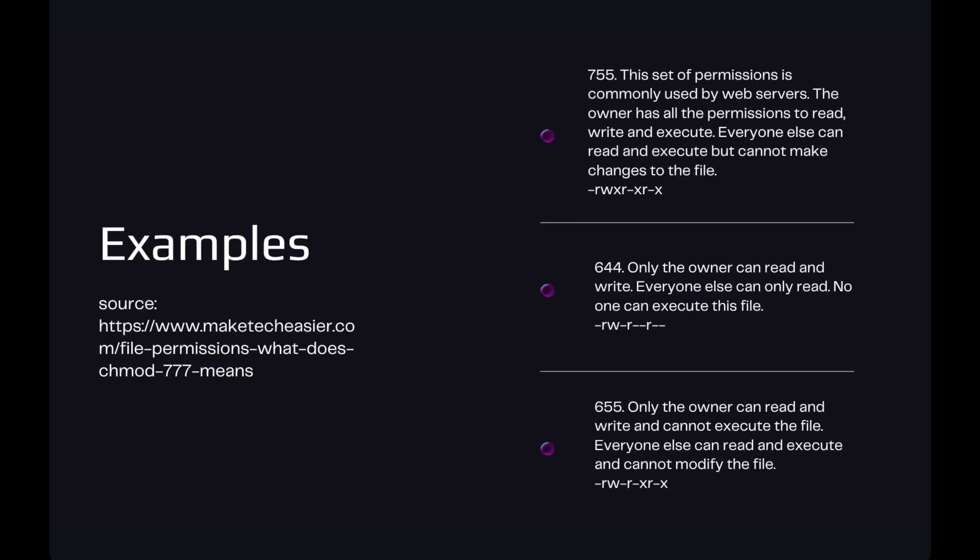Looking at 644: to get 6 you add 4+2, meaning the owner can read and write but cannot execute. The second 4 denotes the group's permission, and the final 4 denotes other users' permissions — so everyone else can only read the file, and no one except the owner can write. Finally, 655 means the owner can read and write, while everyone else can read and execute but cannot write to the file. Hopefully you now have a clear understanding of how permissions work in Linux.